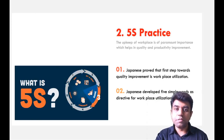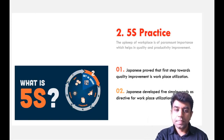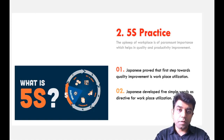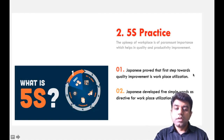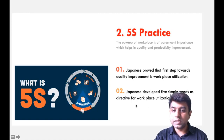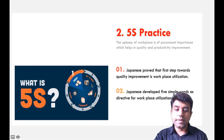We need to improvise the workplace area in order to improvise the quality — that is its prime agenda. The 5S practice was developed by the Japanese and it was actually the first steps towards quality improvement in the workplace. The Japanese developed 5 simple words as a directive: Sort, Set in Order, Shine, Standardize, and Sustain.